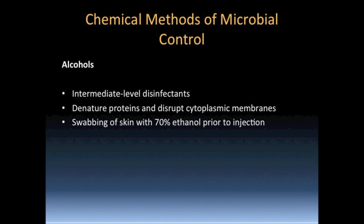Alcohols effectively destroy vegetative bacterial cells, fungi, and enveloped viruses. They are ineffective against endospores, fungal spores, and naked viruses such as the poliovirus and the hepatitis A virus. Alcohols may be used alone or as solvents for tinctures. Tinctures are combinations of alcohol with other antimicrobials. Alcohol has the advantage of working and then evaporating without leaving behind a residue.